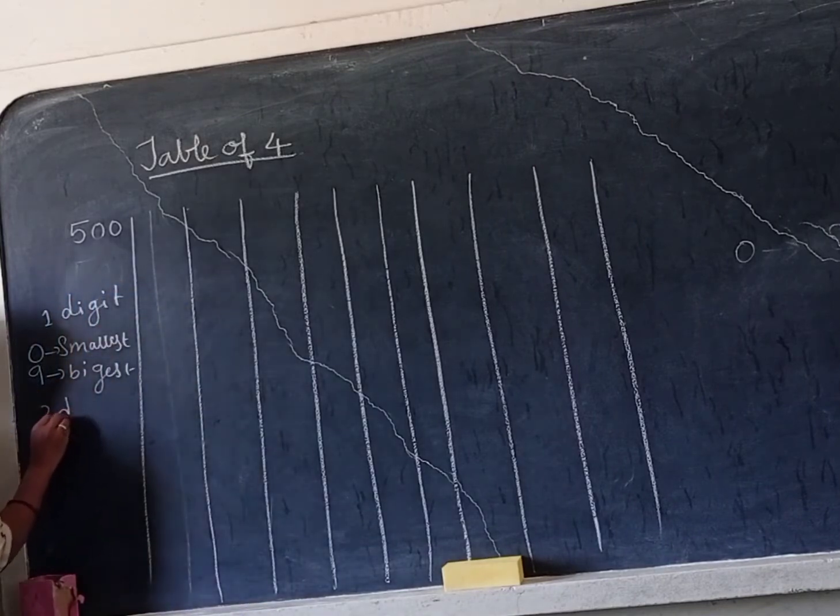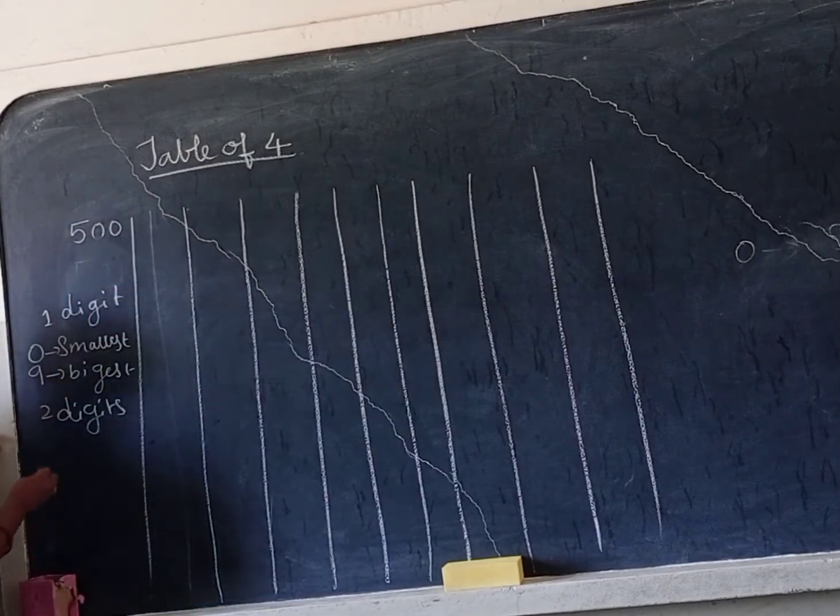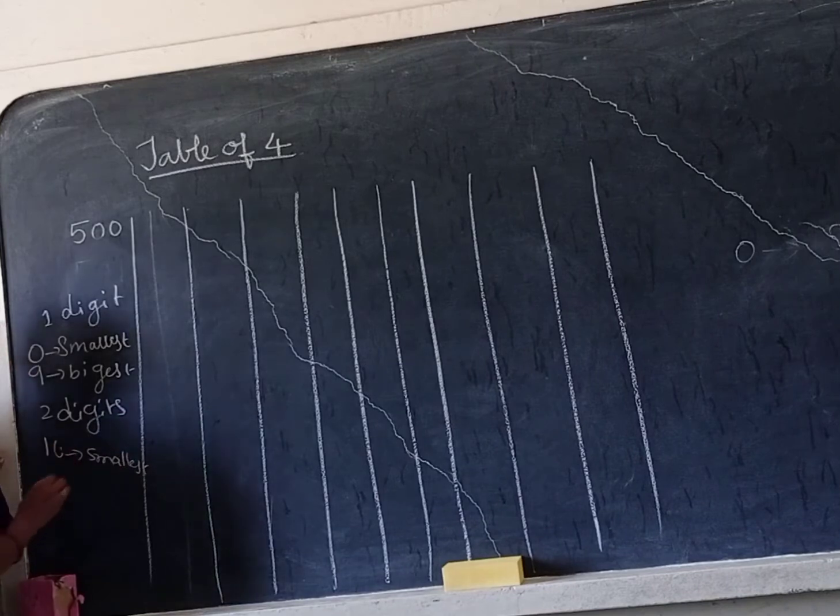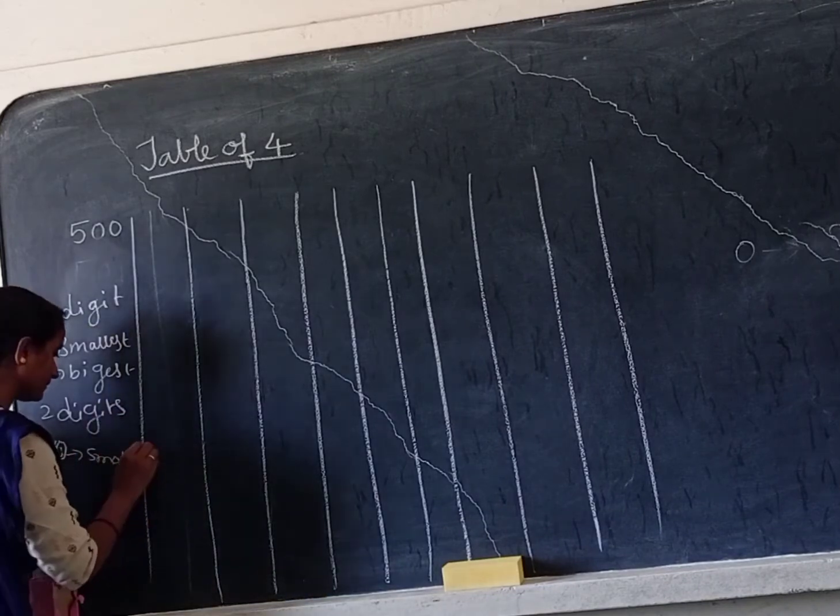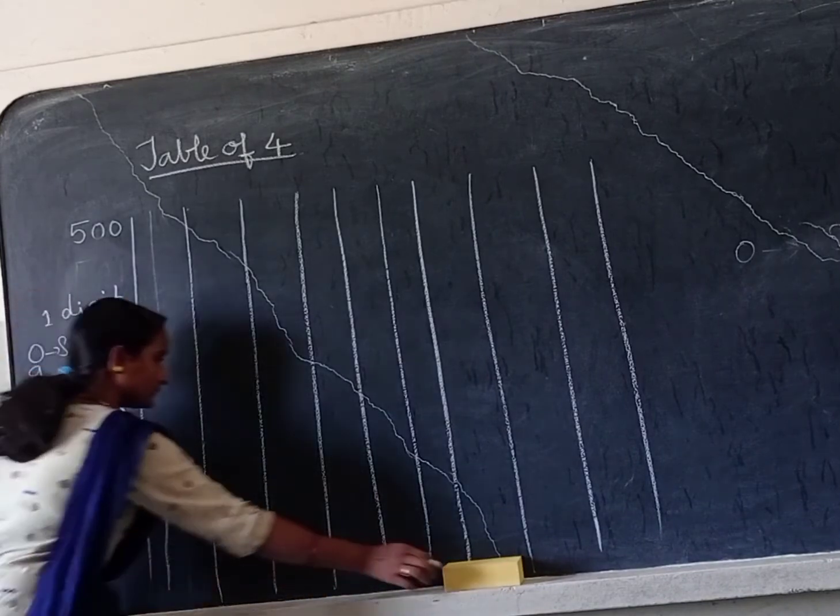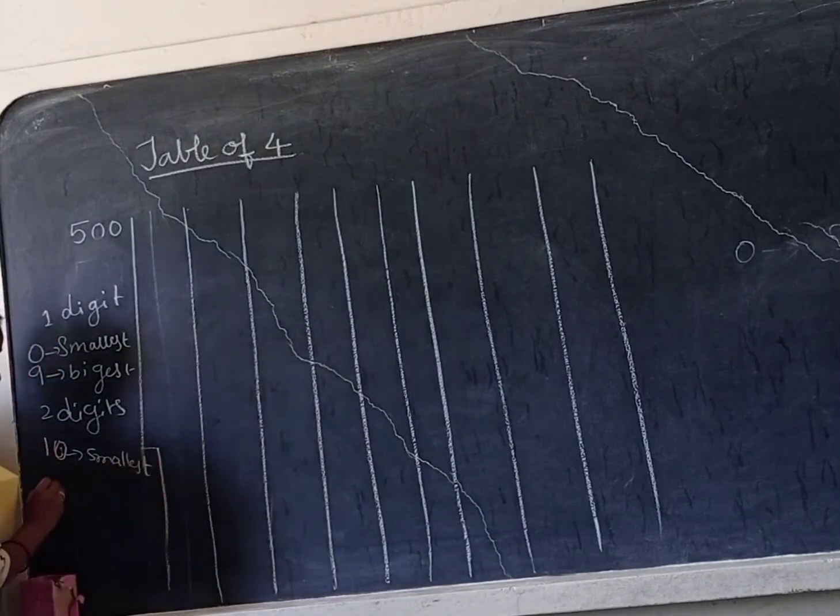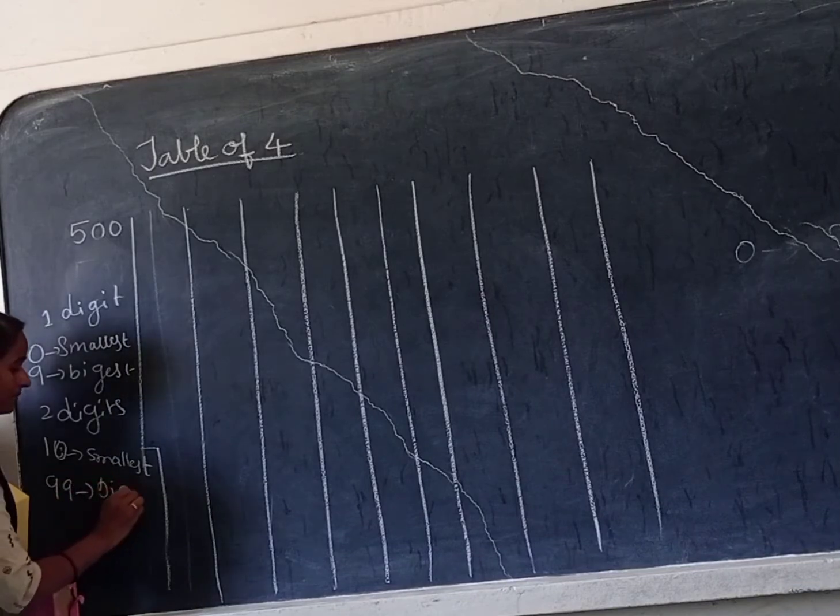What about two digits? 10 is the smallest two digit number. 99 is the biggest.